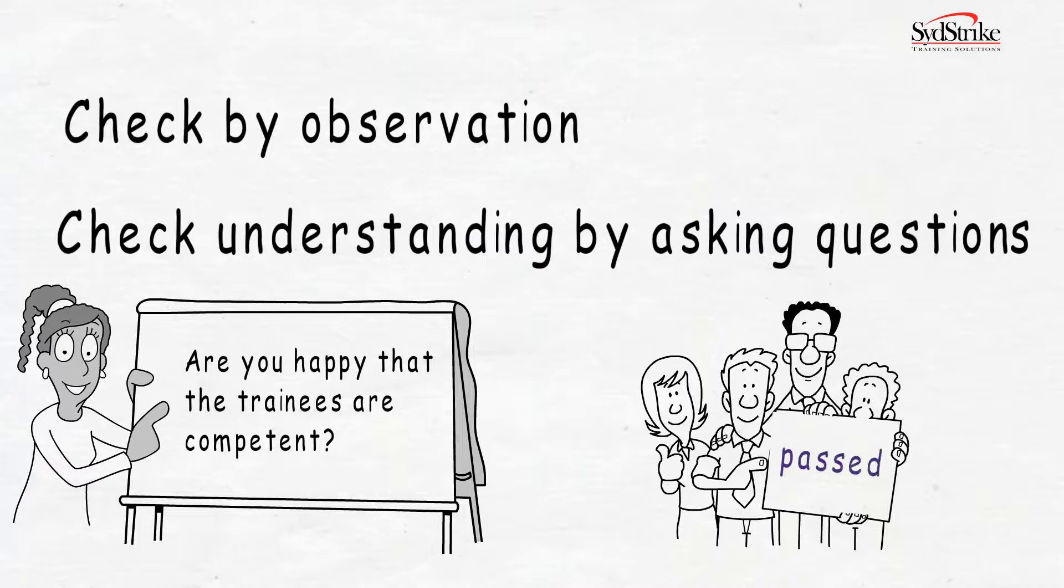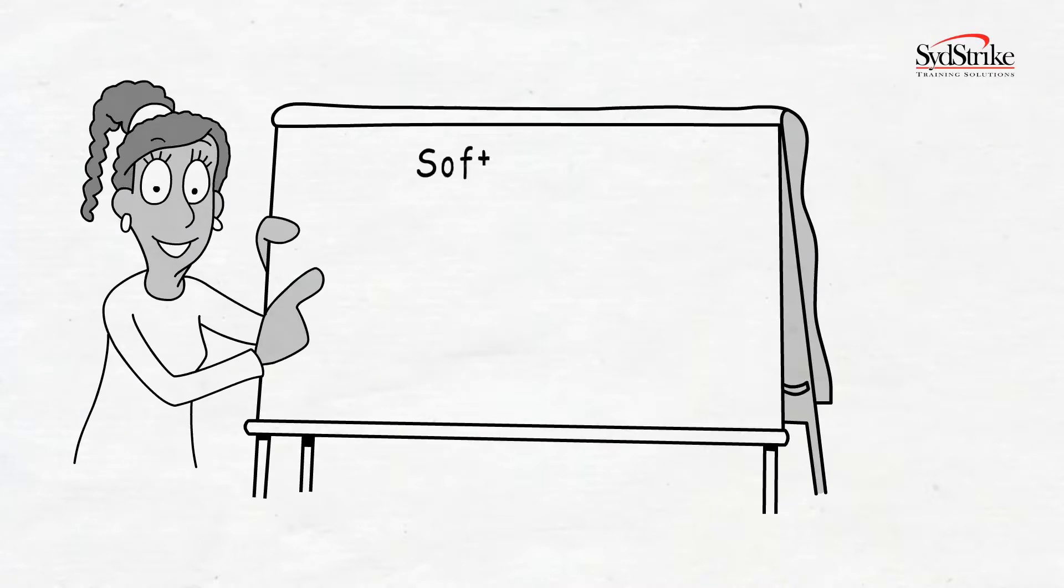When a soft check is sufficient, for example, your learners don't need to be fully skilled but do need to understand what to do and where to go for help, then perhaps a softer check of learning may be appropriate, such as asking questions.